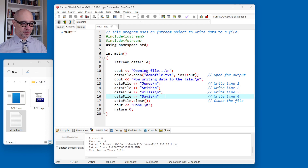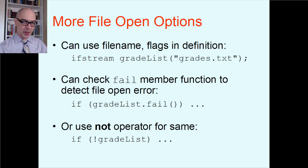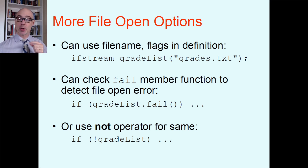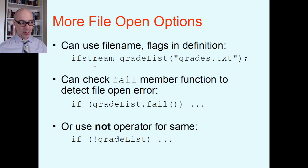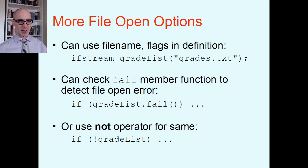You can just open the file and then use the insertion operator just like you do with cout, and it goes to that file instead. Also, you can combine the declaration and opening at once — declare an ifstream object, name it gradeList, and immediately put the file name in parentheses. It will initialize and connect to that file on the hard drive right away, saving you a line.